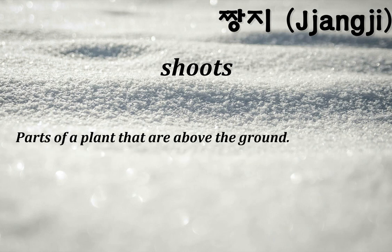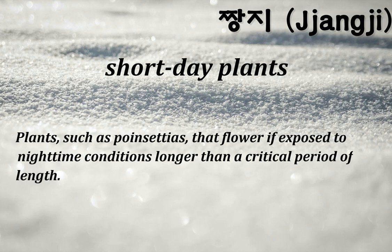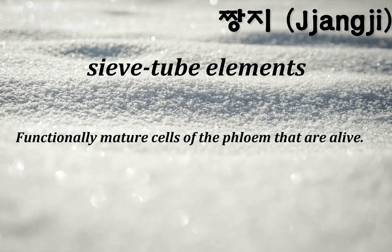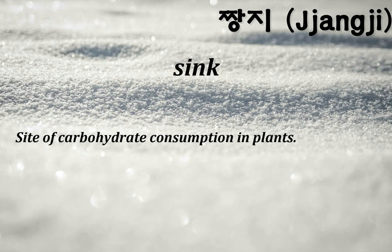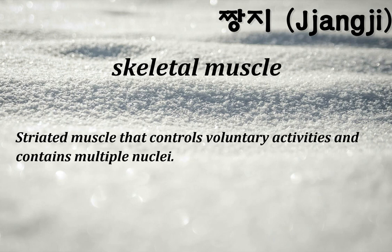Shoots: parts of a plant that are above the ground. Short-day plants: plants such as poinsettias that flower if exposed to nighttime conditions longer than a critical period of length. Sieve tube elements: functionally mature cells of the phloem that are alive. Sink: site of carbohydrate consumption in plants. Skeletal muscle: striated muscle that controls voluntary activities and contains multiple nuclei.